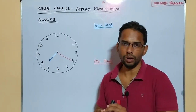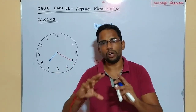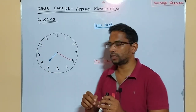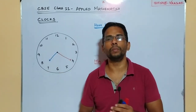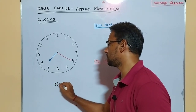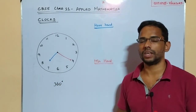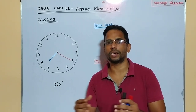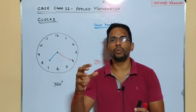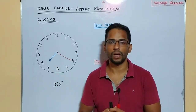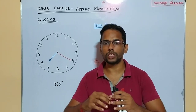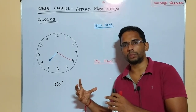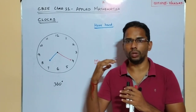Let us start with the structure of a clock. No matter what shape your clock is, you will always have the numbers arranged in a circular way. One complete rotation is always equal to 360 degrees. A clock has three hands: the hour hand, the minute hand, and the seconds hand. Using these hands we predict what time the clock is showing. Now let's discuss about the speed of the hour hand and minute hand, because these concepts are what we use when solving problems.